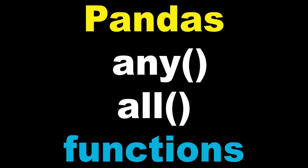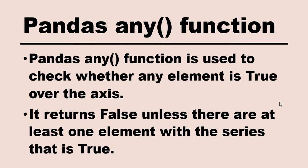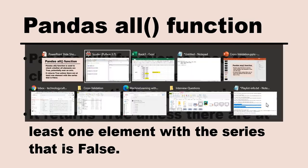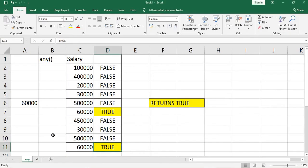Welcome to the pandas any and all function tutorial. The any function is used to check whether any element is true over the axis — it returns false unless there is at least one element in the series that is true. Similarly, the all function is used to check whether all elements are true over an axis, and it returns true unless there is at least one element in the series that is false.